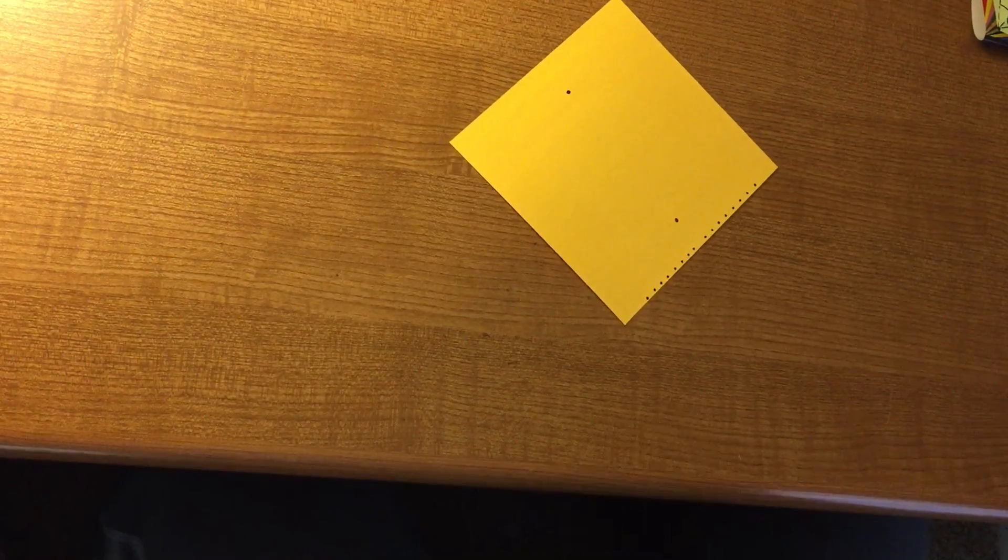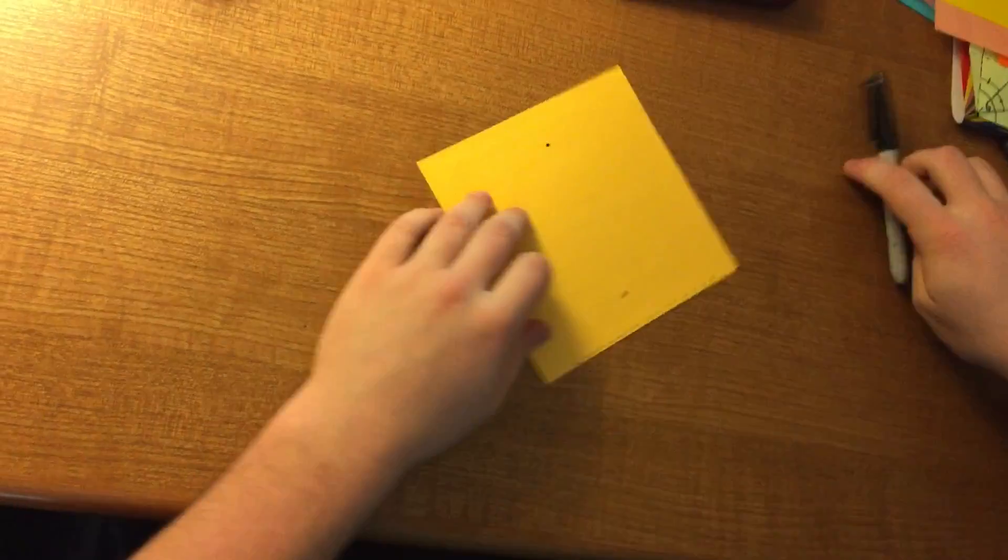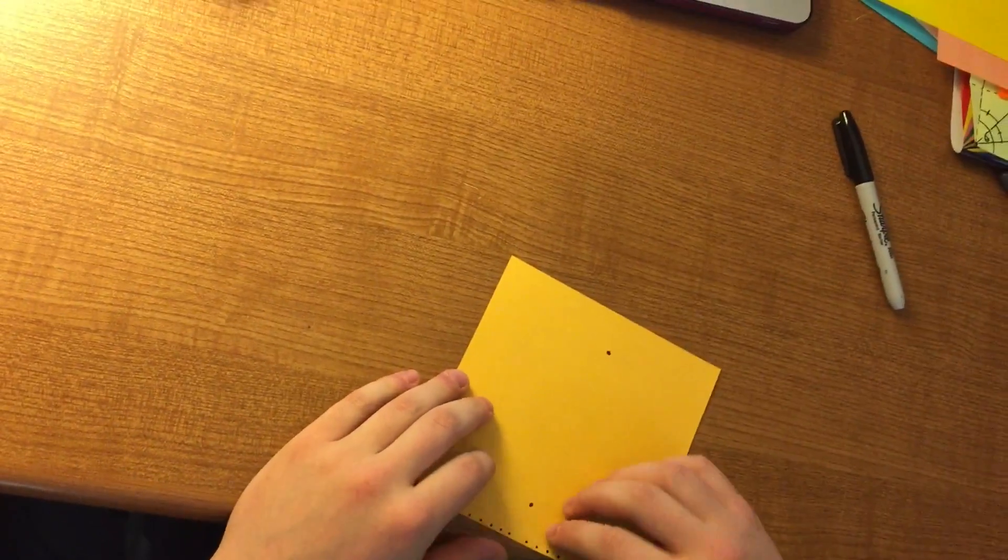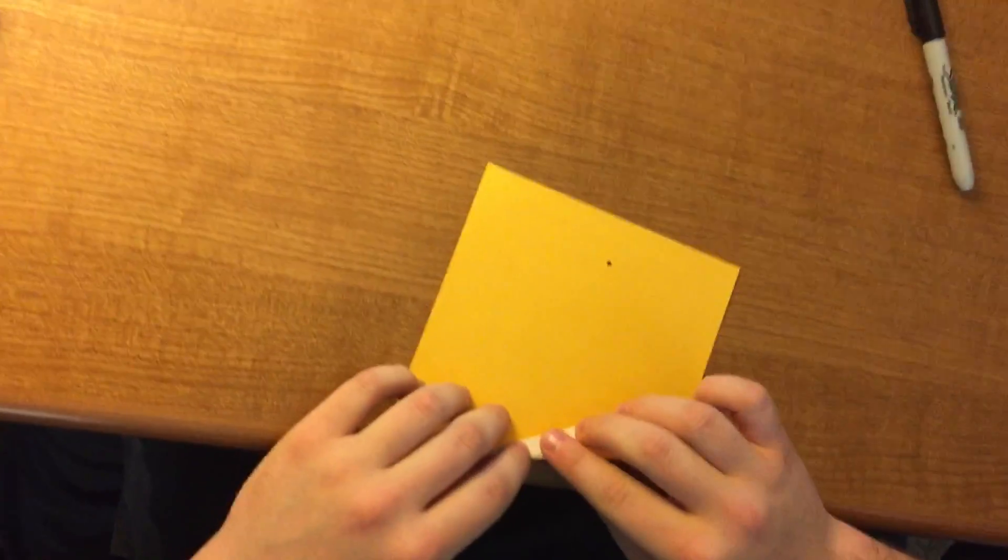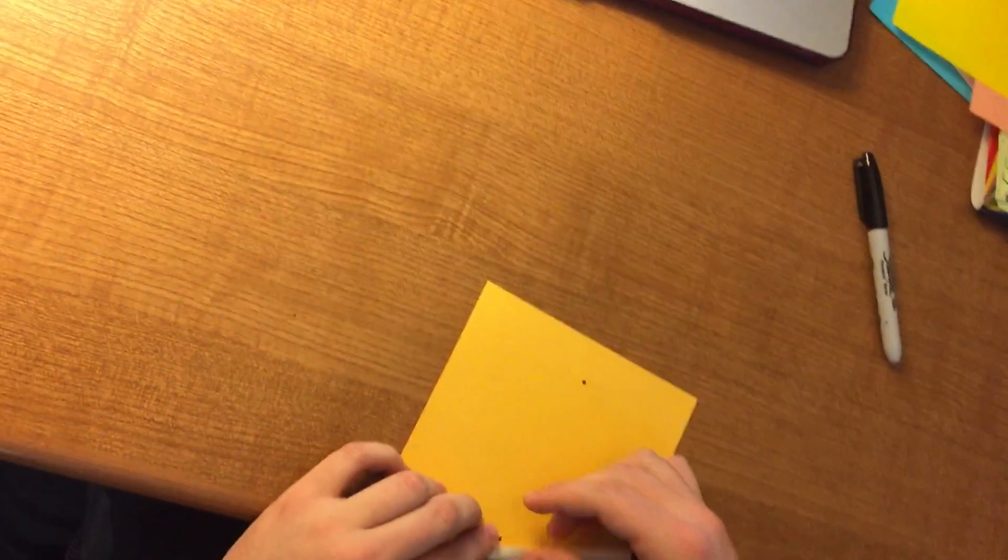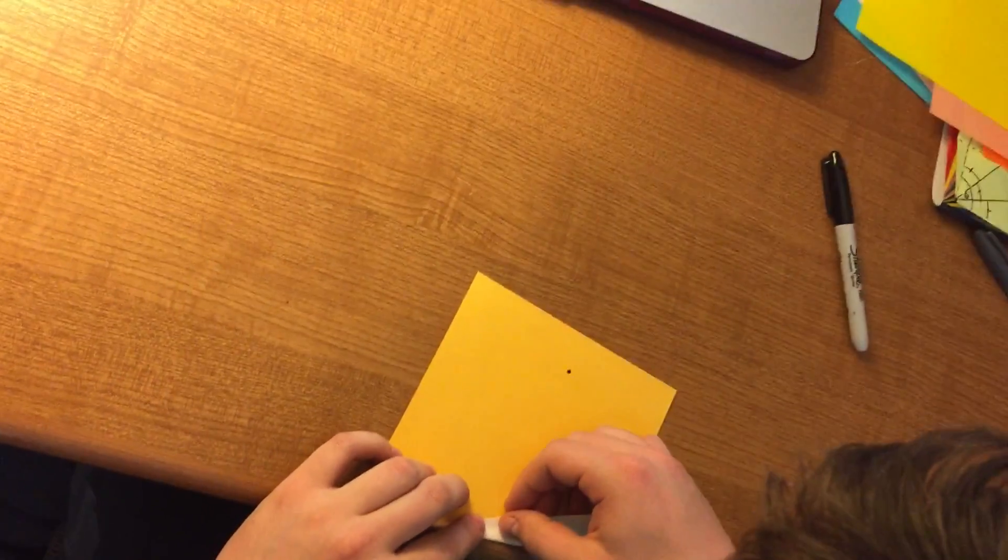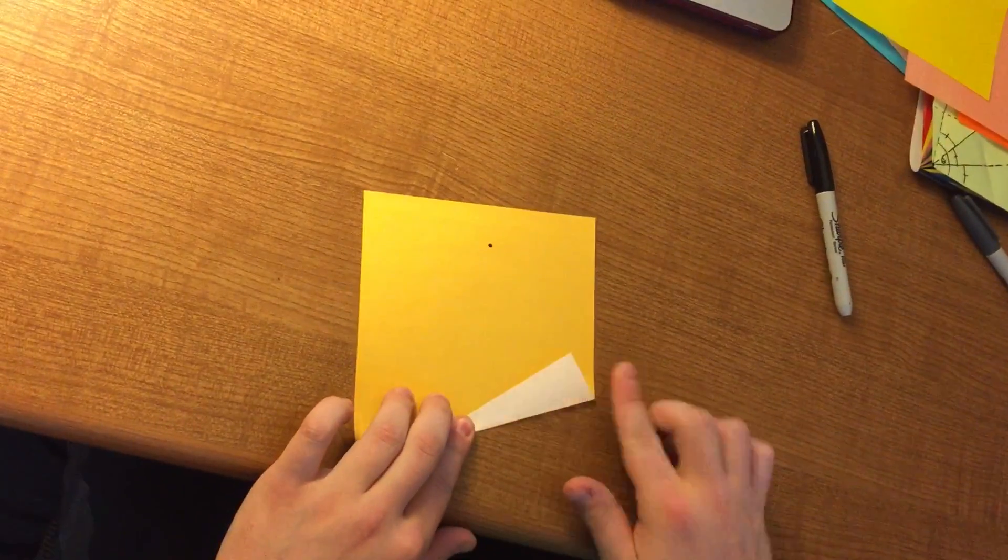Okay, so you get those points, and now what you're going to do is very simply just line up the points. Once again, I'm using Sharpie because it doesn't bleed through. So you're going to try to line up the points with the dot and then make a crease.